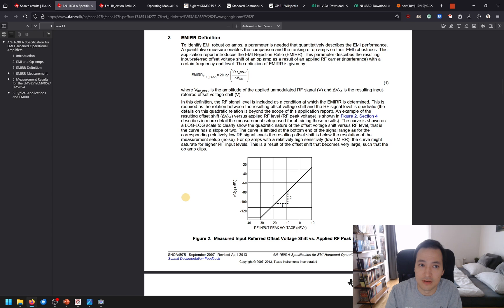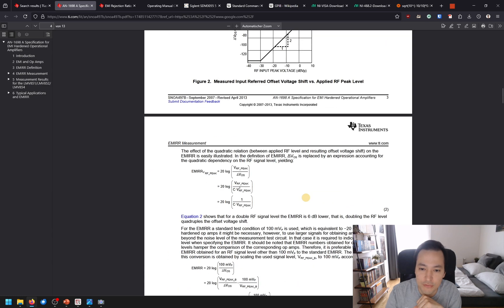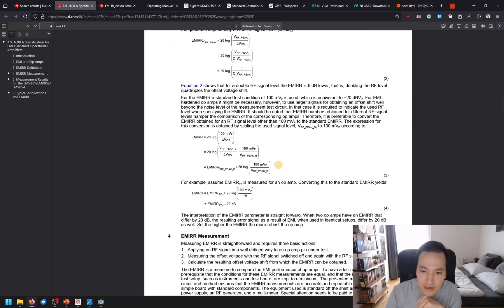Let's have a look again at our application note. Here we can see again the definition of the EMI rejection ratio. As discussed before, if we increase our RF signal by 10 decibels in amplitude, we expect to see 20 decibel difference in our offset voltage. Therefore here we have a correction to refer it back to 100 millivolt. Be careful, in this application note there is a tiny error. Here this plus should be a minus, because these two terms are also reversed.